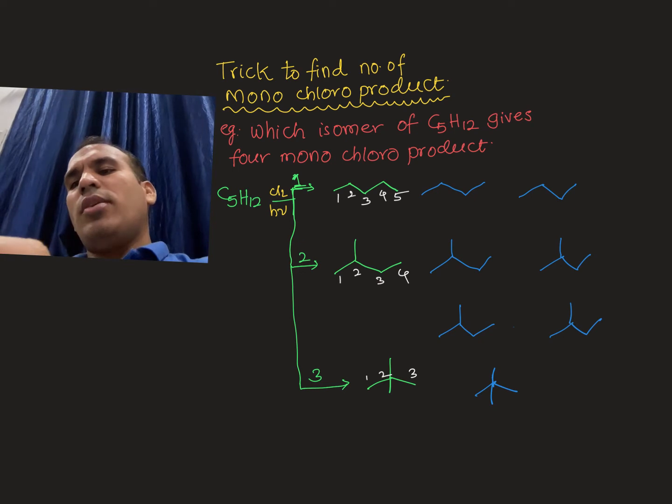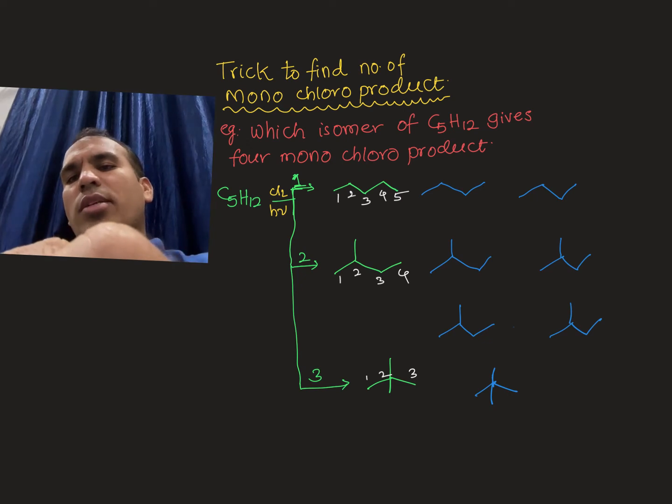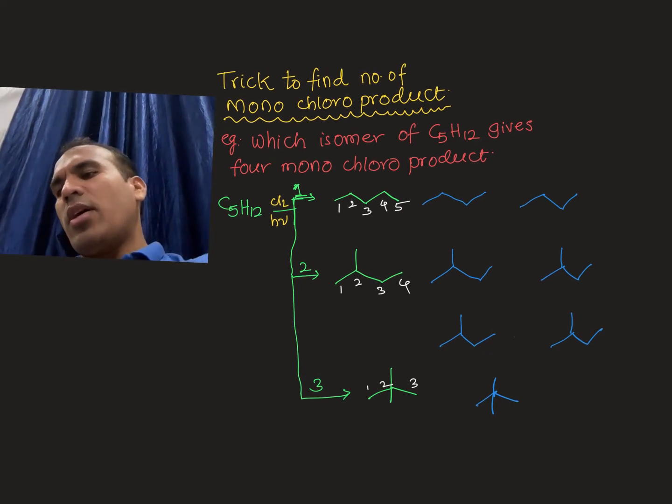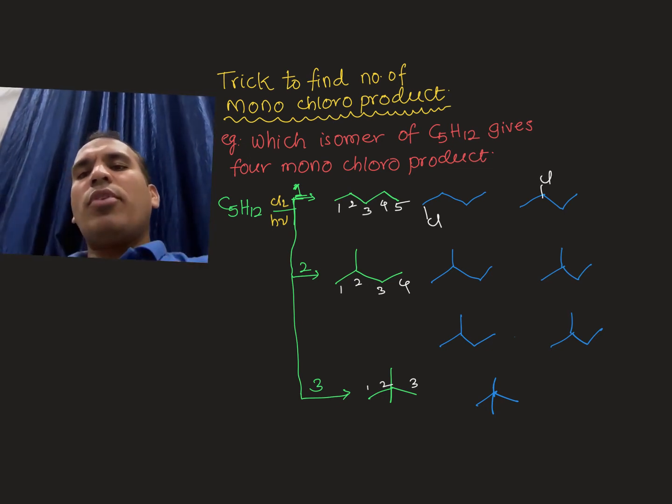For example, C5H12 will give three constitutional isomers. Now I am taking one of the constitutional isomers and attaching chlorine at any one of the carbons. So that is one. Next one is at this carbon.